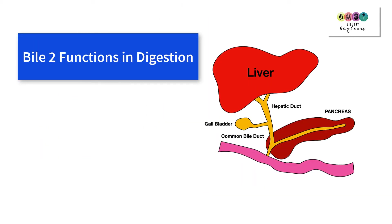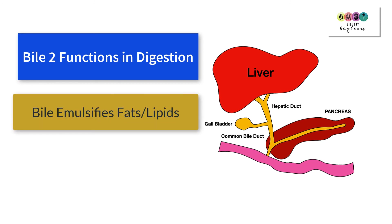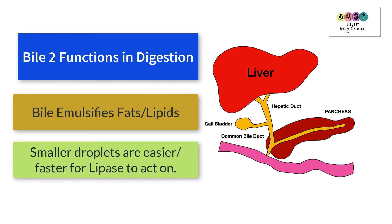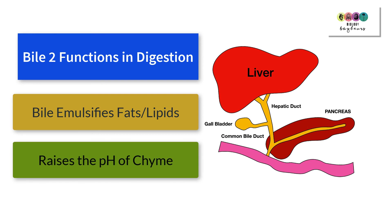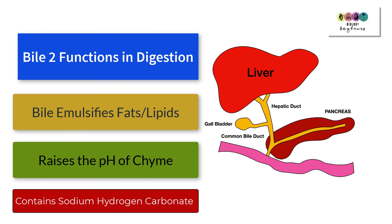Going back to the liver: bile is made in the liver, stored and concentrated in the gallbladder, and then secreted into the small intestine. Its first role is to emulsify fats — to turn big droplets of fat into many smaller droplets — making it easier for pancreatic lipase to act on those lipids and break them down. The second role of bile is to raise the pH of the chyme, neutralising it, because bile also contains sodium hydrogen carbonate, which is also produced by the pancreas.